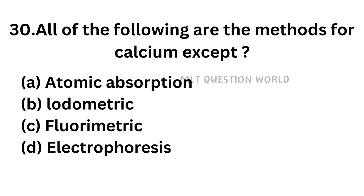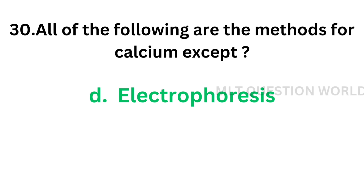Question number 30: All of the following are methods of calcium estimation except — option A: atomic absorption, option B: titrimetric method, option C: fluorimetric method, option D: electrophoresis. The correct answer is option D, electrophoresis. Electrophoresis is not used for calcium estimation.